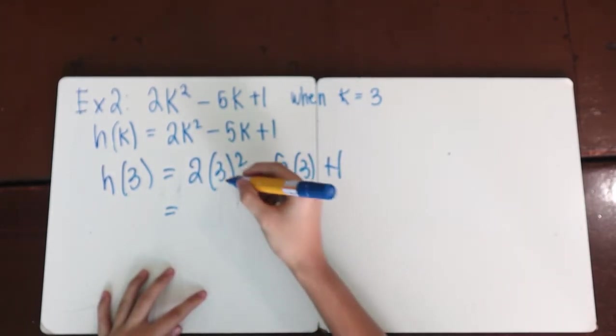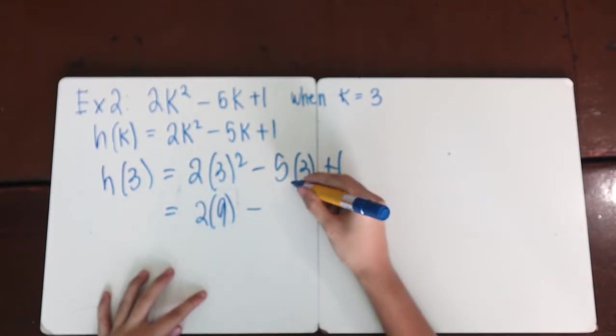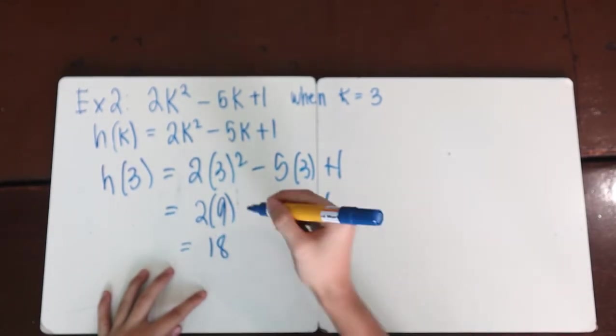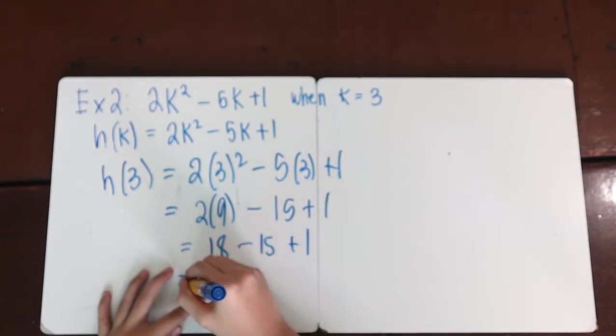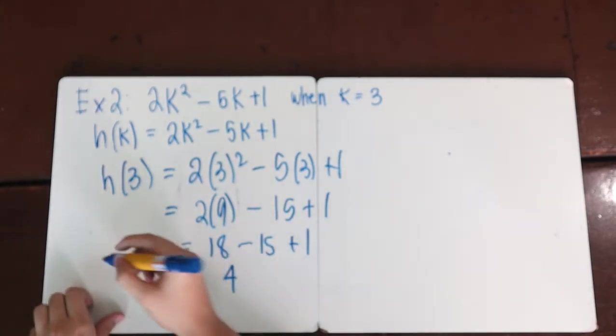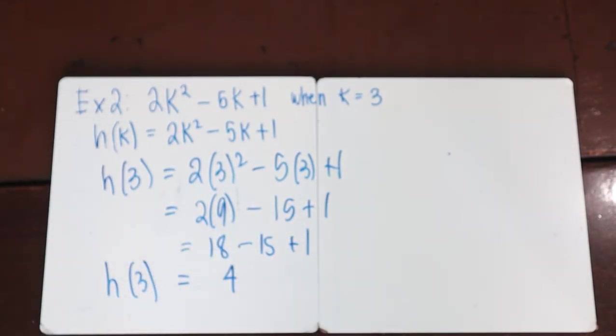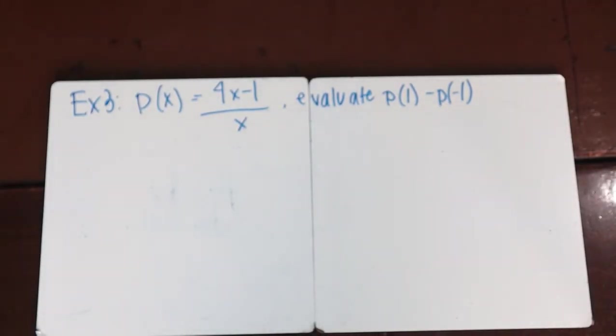We should just solve now. So 3 squared is 9, so that's 2 times 9, minus 5 times 3 is negative 15, plus 1, which is then 18 minus 15 plus 1, which equals 4.